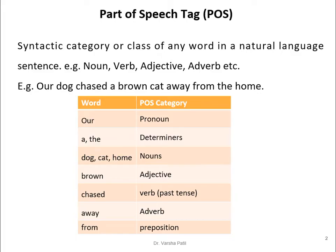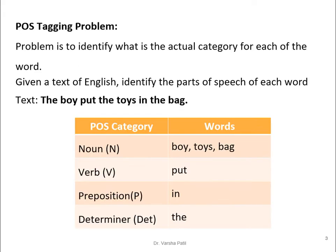We require to automatically do the processing so that whenever a sentence is given, we can separate its Part of Speech tags. The POS tagging problem is to identify the actual category for each word given a text of English.